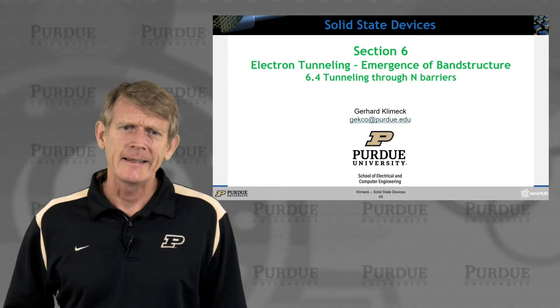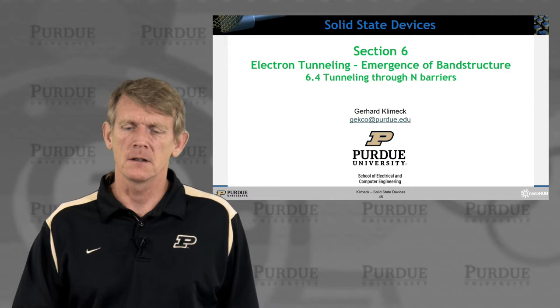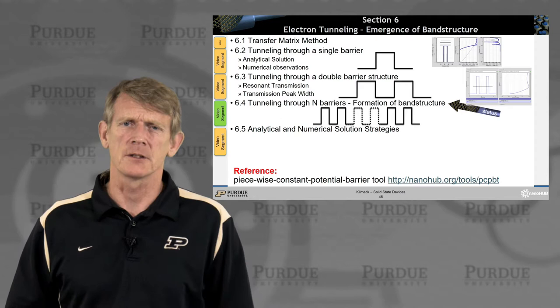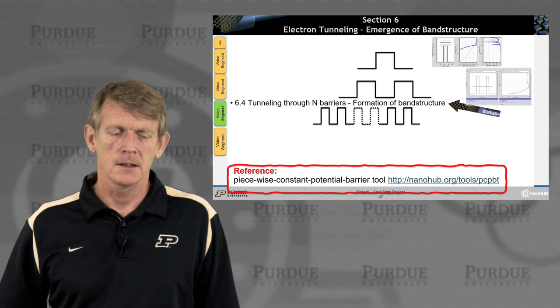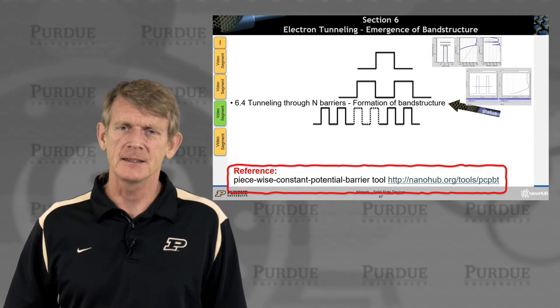Now we're ready to look at tunneling through a structure that has a number of barriers, and we want to see how band structure is being formed. As a reference, there is a tool called Piecewise Constant Potential Barrier Tool, PCPBT, on NanoHub, and we'll use that extensively in this section.